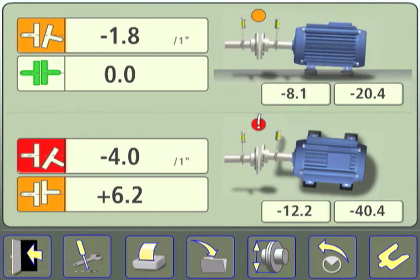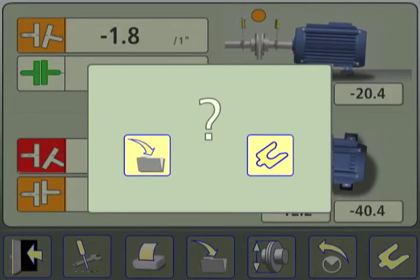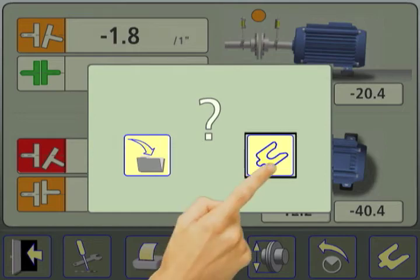Next, while the bolts are still loose, we will go live to make the horizontal adjustment. Touch the shim icon in the lower right corner of the screen. Before making an adjustment, the system presents the option of saving results. Touch the shim icon to go live and proceed with the horizontal move.